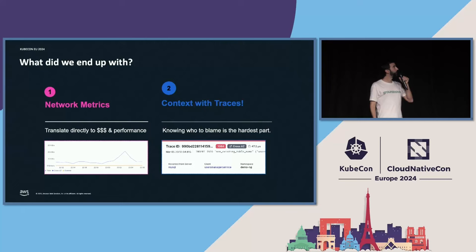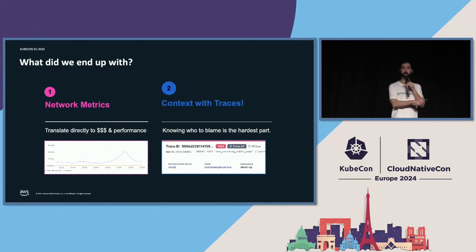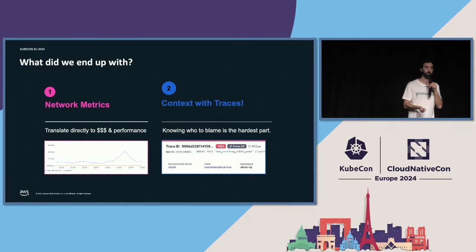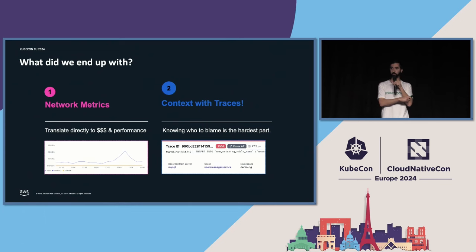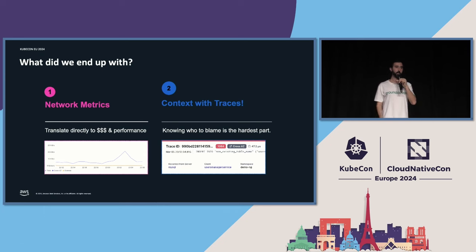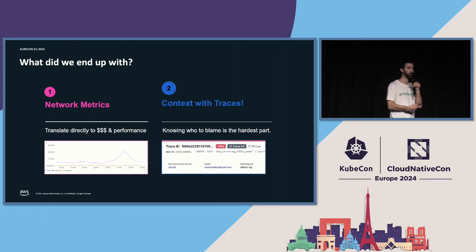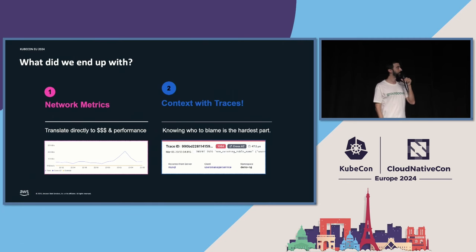What did we end up with? Network metrics that translate directly into cost and performance of your application. You might want to treat cross-AZ communication just by looking at these metrics. But we also get deep context with traces — now we know who to blame, where to focus, how to solve the issue, and how to make architectural decisions based on that.